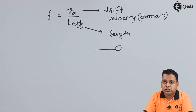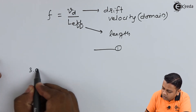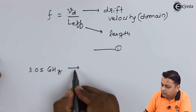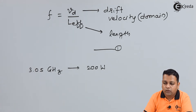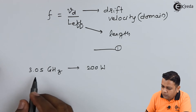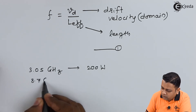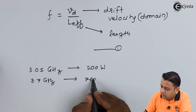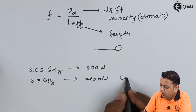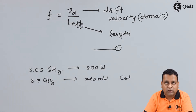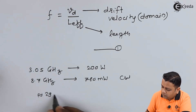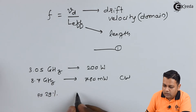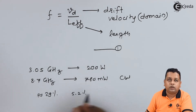The observations are: at 3.05 gigahertz, 200 watts of pulses are obtained at the output. At 8.7 gigahertz, it results in 780 milliwatts of continuous wave output. The efficiency of the device is approximately 29 percent for the first case and 5.2 percent for the continuous wave case.